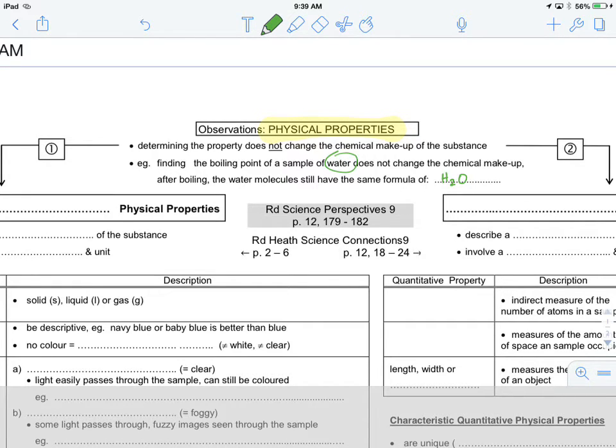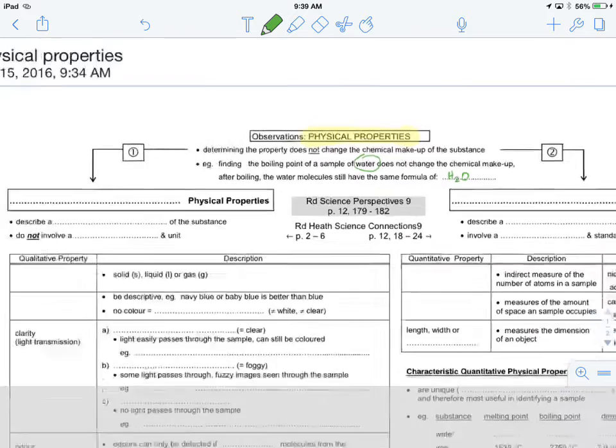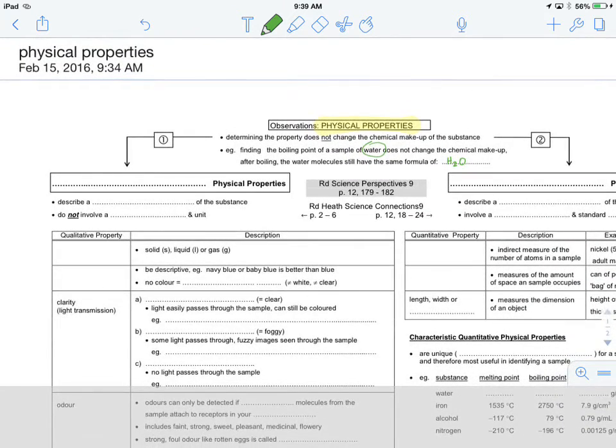We're also going to talk about chemical properties where measuring chemical properties would change the chemical makeup, but that's going to come in our chemistry unit. For right now, we're talking about physical properties and there's two types. We're going to talk about the first branch and then the second branch of this flow chart.